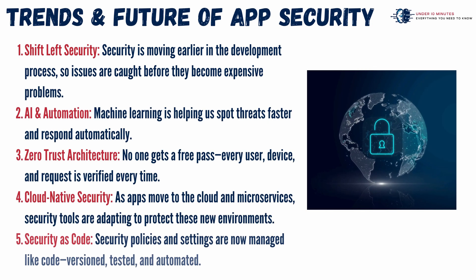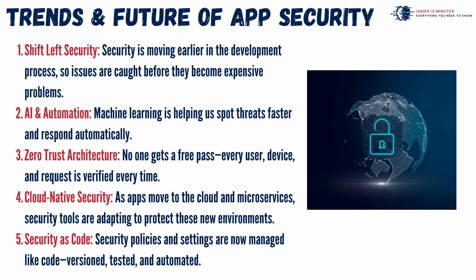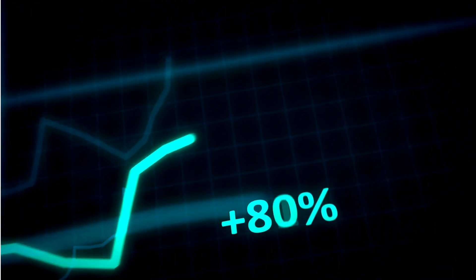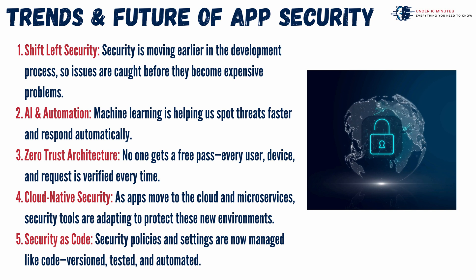Application security is undergoing a dynamic transformation, driven by emerging trends that promise smarter, more resilient systems. A major shift is happening with security moving earlier in the development process — what experts call 'shift left' — to catch vulnerabilities before they become costly. AI and automation now play a bigger role, rapidly identifying and responding to threats using machine learning. Meanwhile, zero-trust architecture ensures that every request and user interaction is rigorously verified, eliminating assumptions of trust. As applications migrate to cloud-native environments and microservices, security tools are evolving to meet new challenges. And with security as code, organizations are treating their security policies like software — fully versioned, tested, and automated. Keeping pace with these innovations is essential for building future-proof, secure applications.